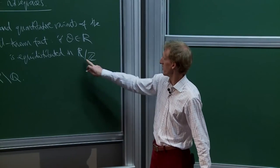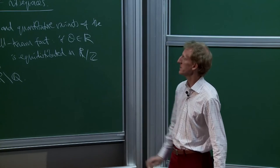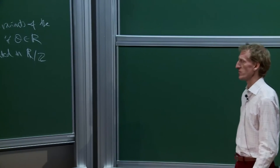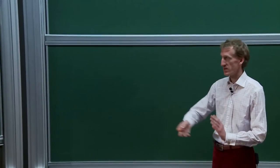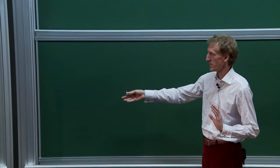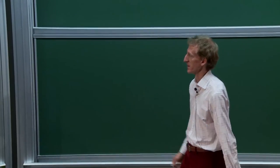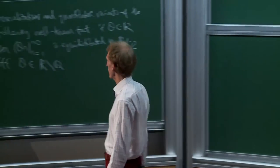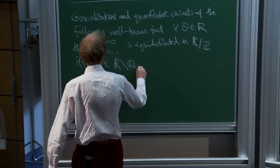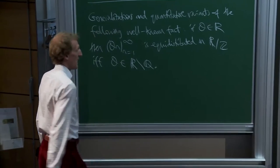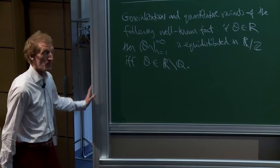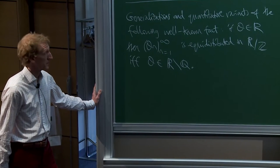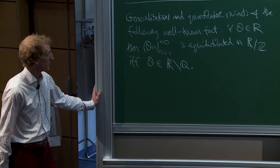I'm going to be generalizing that to polynomial sequences on arbitrary quotients G mod gamma — here I've just got R modulo Z. I'm also interested not in the whole sequence up to infinity, but in finite segments of it, all with applications in mind for next time and the time after.